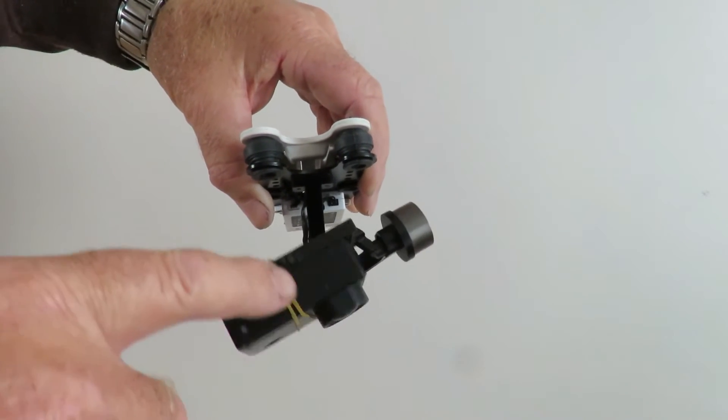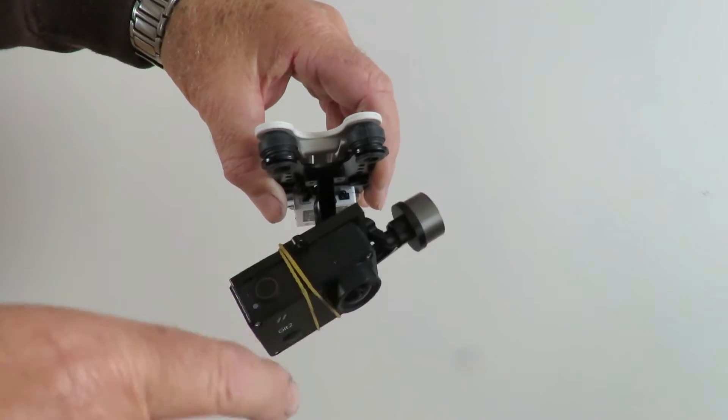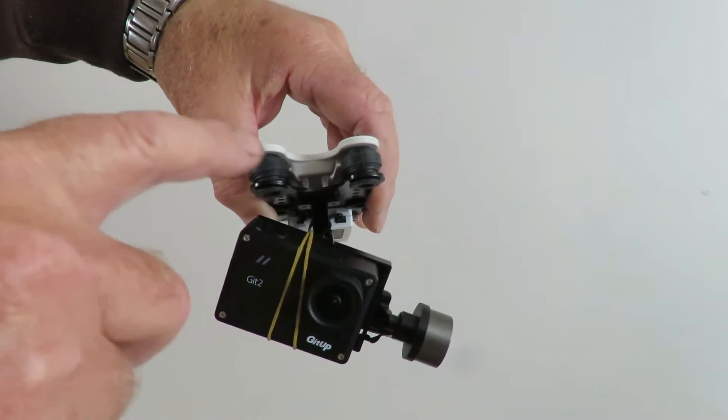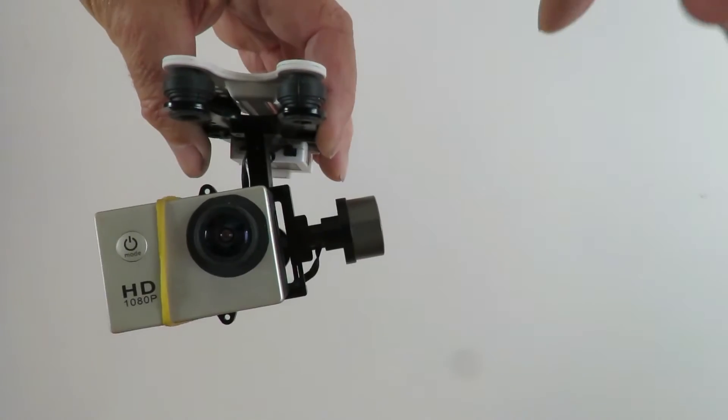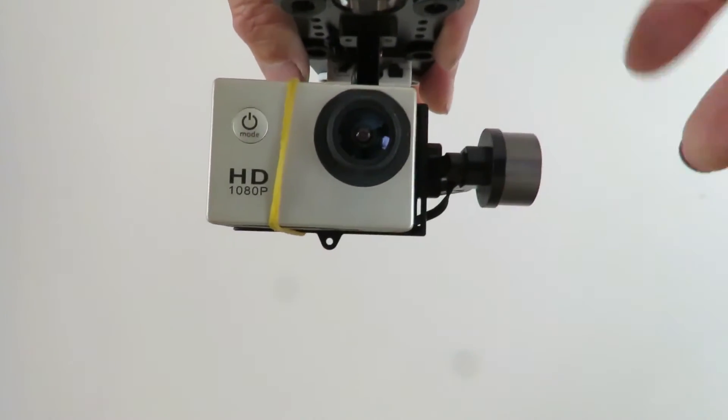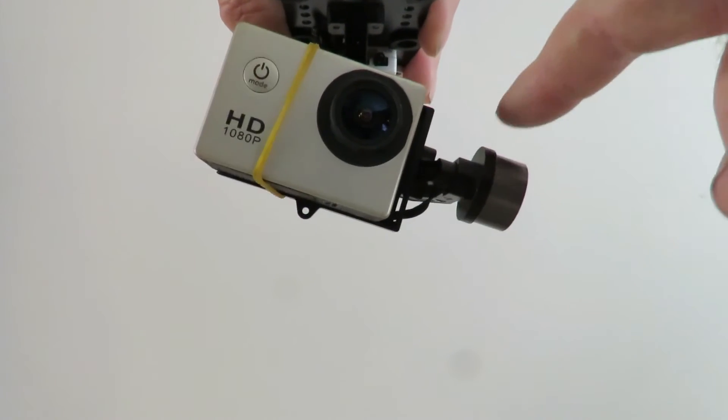That's the GIT2 that's sitting physically in there at the moment. I'll pop the SJ4000 in there as well just to give you an idea as to how good this actually works. We have the old SJ4000, and again this has got absolutely no weight on it at all.